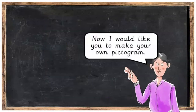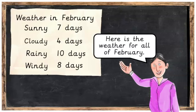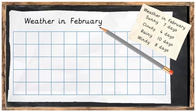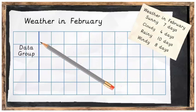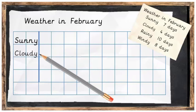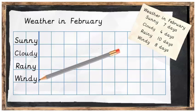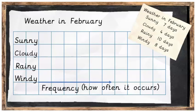Excellent work! Now I would like you to make your own pictogram — this time for the weather in February. Here is the weather for all of February. First, put our title in to label our data: the weather in February. Then write in the data group down the side: sunny first, then cloudy, then rainy, and finally windy. The frequency, or how often it occurs, is going to come out from each word, just like this.